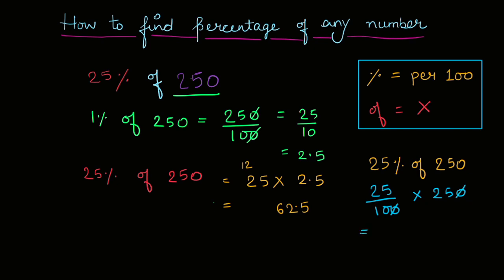So now, twenty-five into twenty-five is what? Six hundred twenty-five. And divide by ten, which means sixty-two point five. So yes, you get the same answer by both ways.